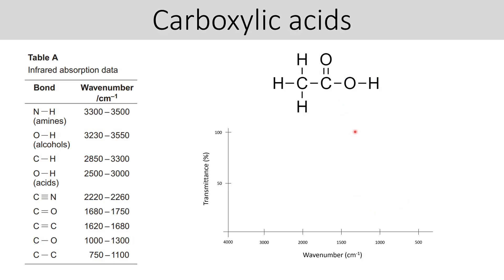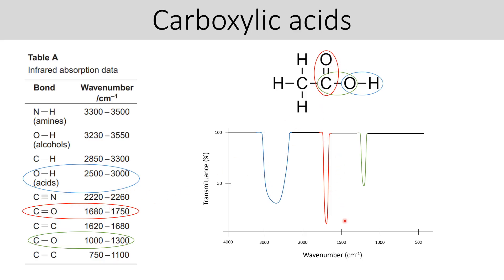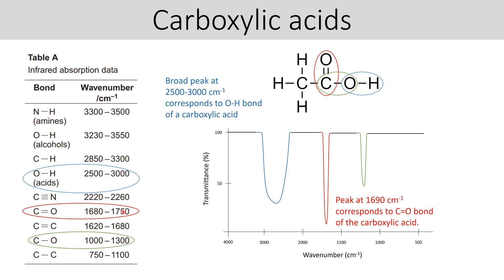Let's have a look at carboxylic acid. The characteristic bonds are: the OH — but this time in the carboxylic acid region — the C–O bond, and the carbonyl C=O. The spectrum shows a broad peak at 2,500 to 3,000 corresponding to the O–H of a carboxylic acid, a peak at 1,690 within the 1,680–1,750 range corresponding to the C=O carbonyl of the carboxylic acid, and then the C–O bond. You have to state the bonds in your explanation — don't just name the functional group, state the specific bond.